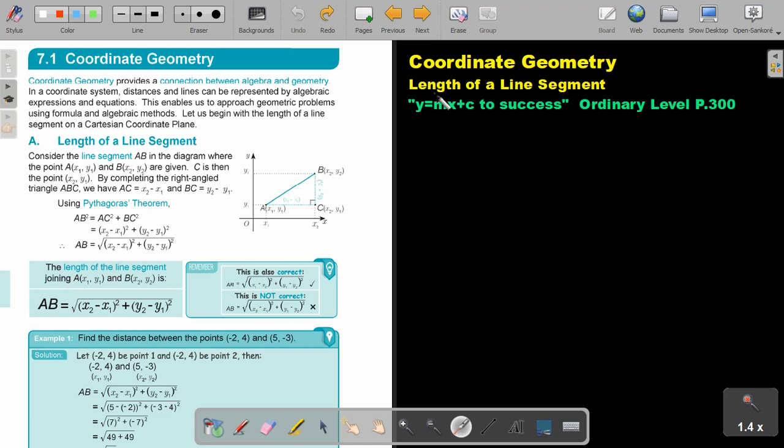Coordinate Geometry. We are going to focus on this video at the length of a line segment. You will find this on page 300 in the Namibia Ordinary Level Mathematics Textbook Y equals mx plus c to success. Coordinate Geometry provides a connection between algebra and geometry. In a coordinate system, distance and lines can be represented by algebraic expressions and equations. This enables us to approach geometric problems using formula and algebraic methods. Let us begin with the length of a line segment on a Cartesian coordinate plane.